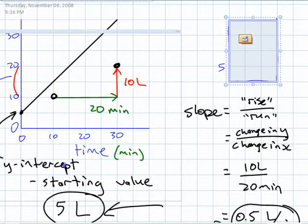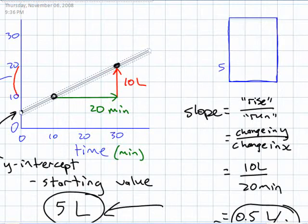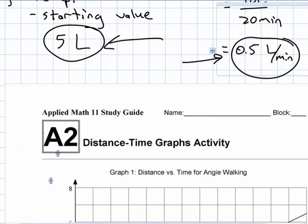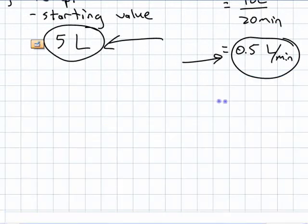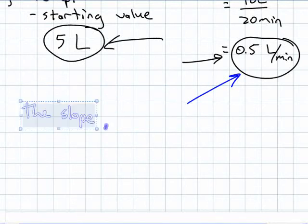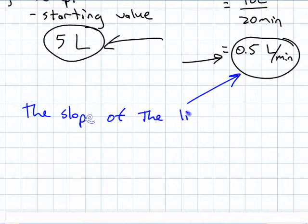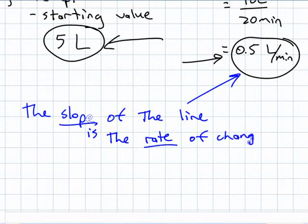It would be changing more at a faster rate. The slope is the rate of change. You should probably write this down here somewhere, at the top of that page, on a different piece of paper, wherever you like. The slope of the line is the rate of change in the situation.